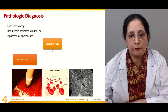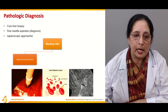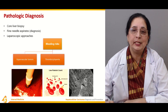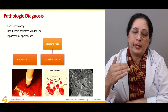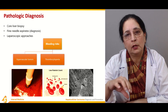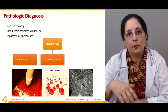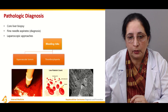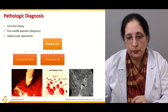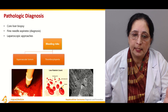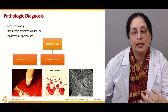Bleeding risks are present if there are hypervascular tumors or thrombocytopenia. Thrombocytopenia is a paraneoplastic syndrome associated with hepatocellular carcinoma. There are three types of blood cells: red blood cells, white blood cells, and platelets.